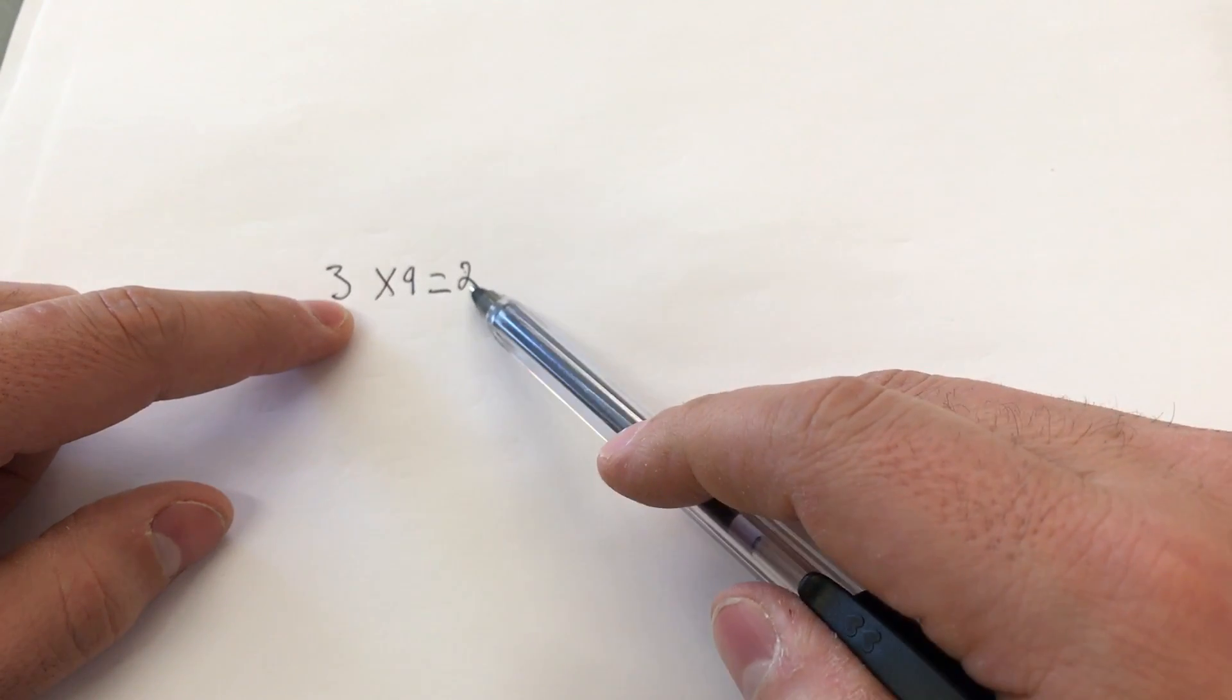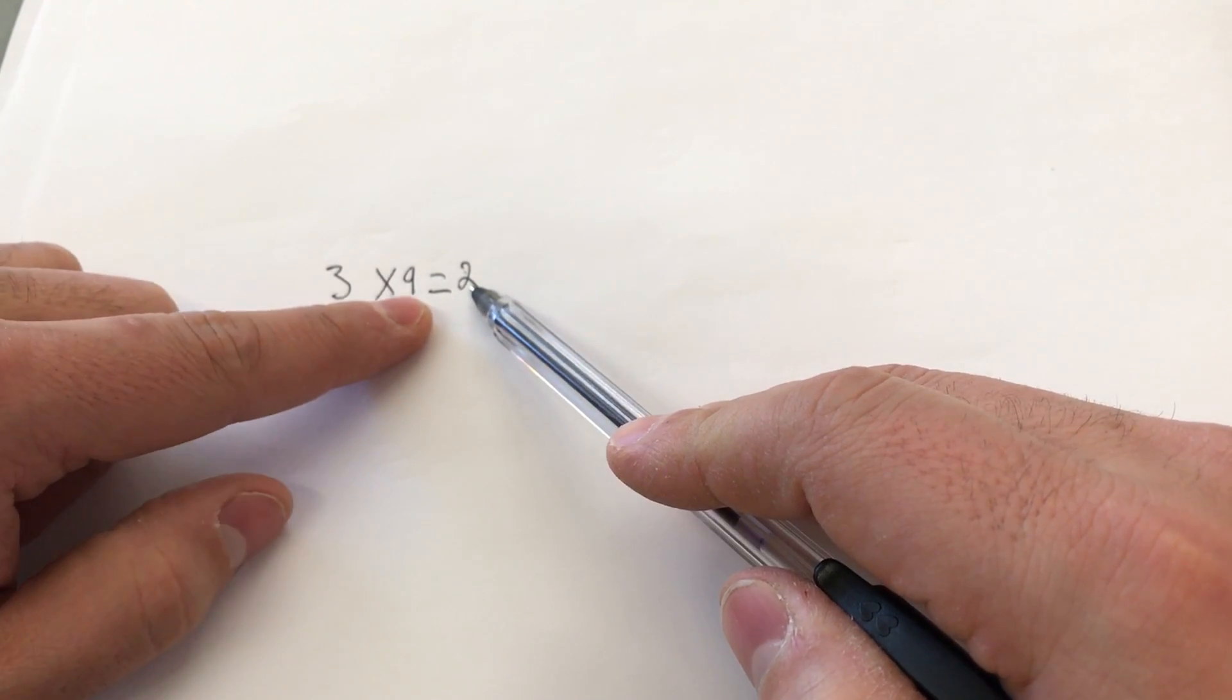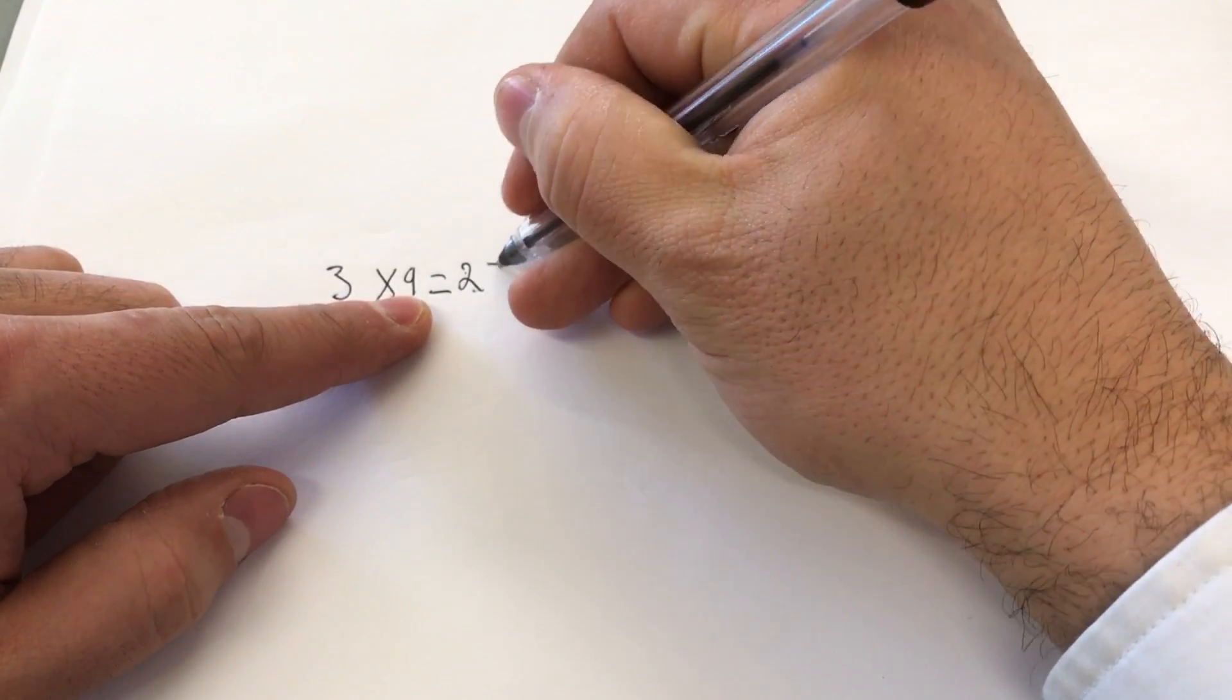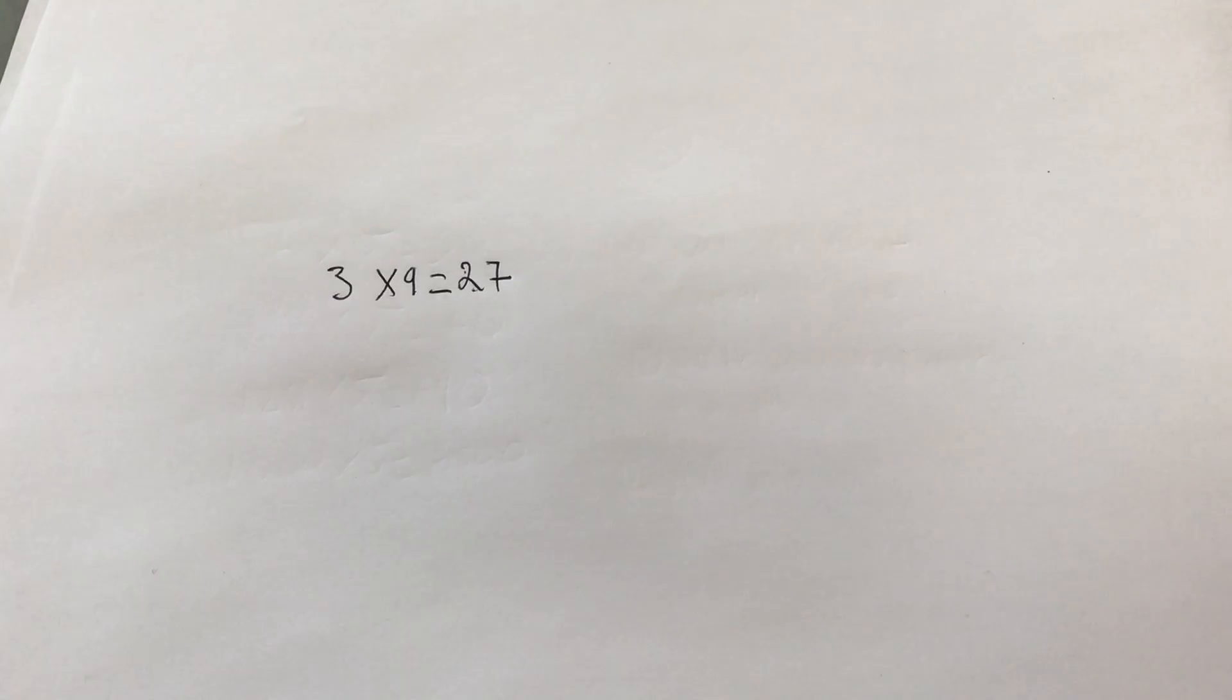Then you take this answer that you just wrote down and subtract it from 9. So 9 minus 2 is 7, and that's your second digit. There's your answer, 3 times 9 equals 27.